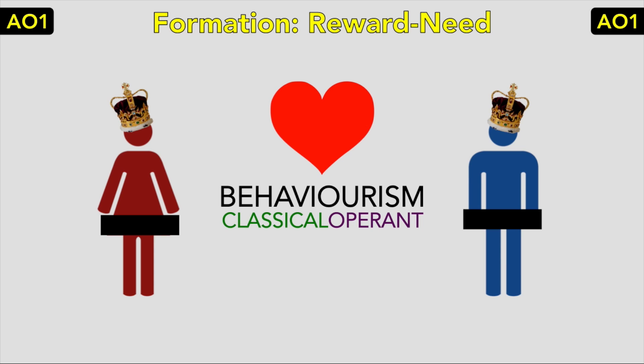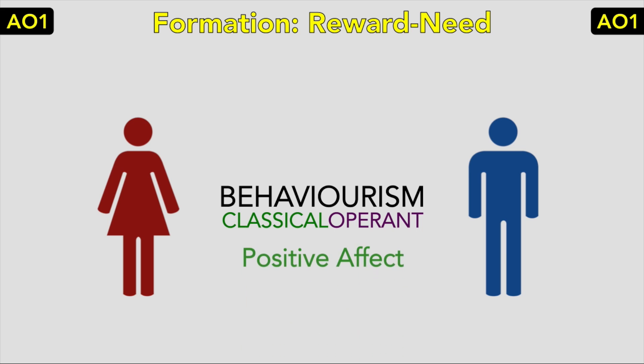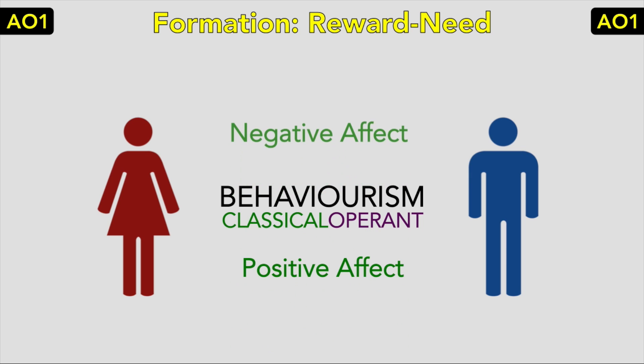It has also been argued that classical conditioning — learning by associations — also plays an important role. By classical conditioning, we like the people who we associate with enjoyment and satisfaction. When we experience enjoyable activities with people, it creates a positive emotional feeling known as the positive affect, so we seek to repeat these positive feelings and desire to spend more time with them. Similarly, we experience a negative affect when we associate them with negative feelings, so we dislike them.